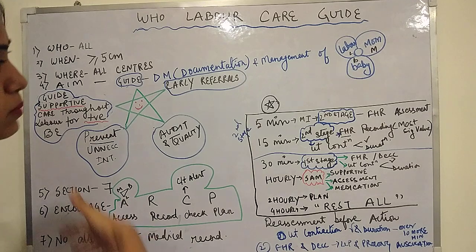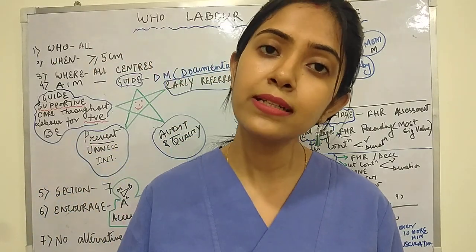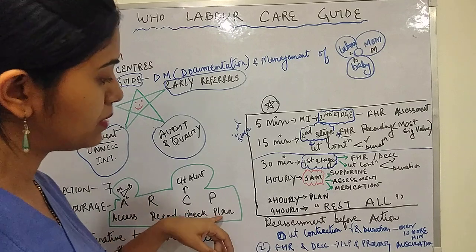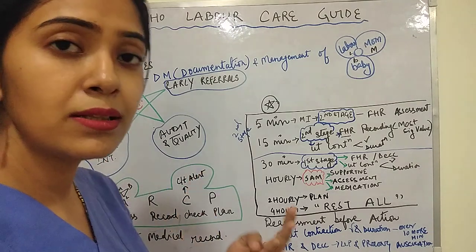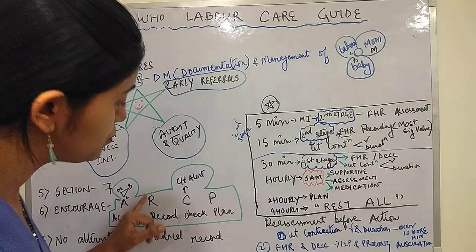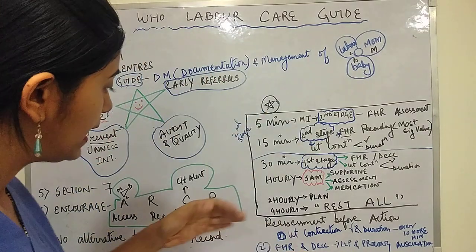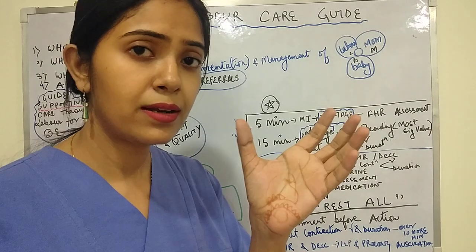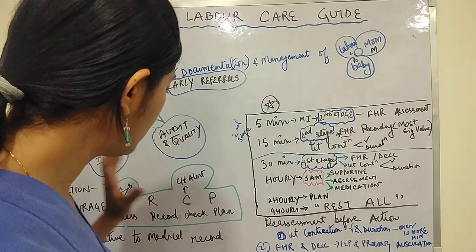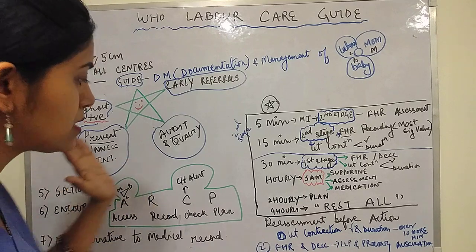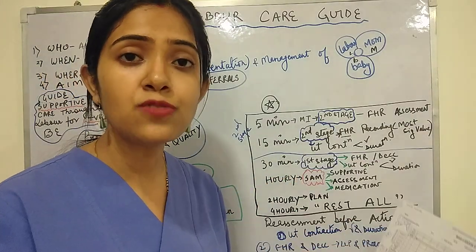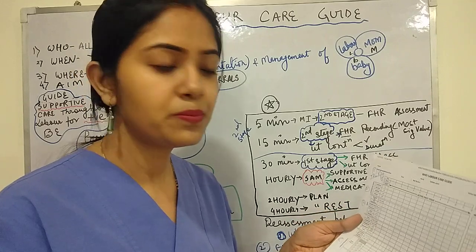When assessing and plotting the various findings during labor, a small mnemonic is followed: ARCP — Assess, Record, Check, and Plan. You assess the mother, the labor, and the baby; record the findings for all three; check if they fall in the alert range; and then plan accordingly — differently depending on whether findings are in the alert range or not. This ARCP pattern makes labor management and the Labor Care Guide very straightforward.